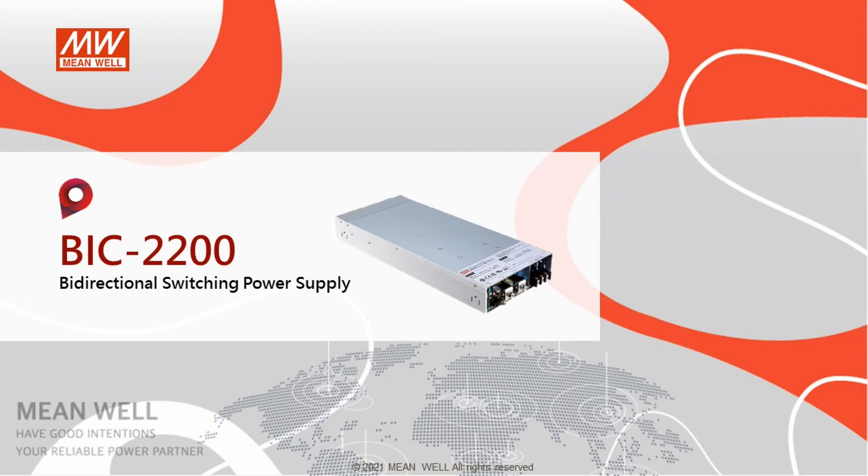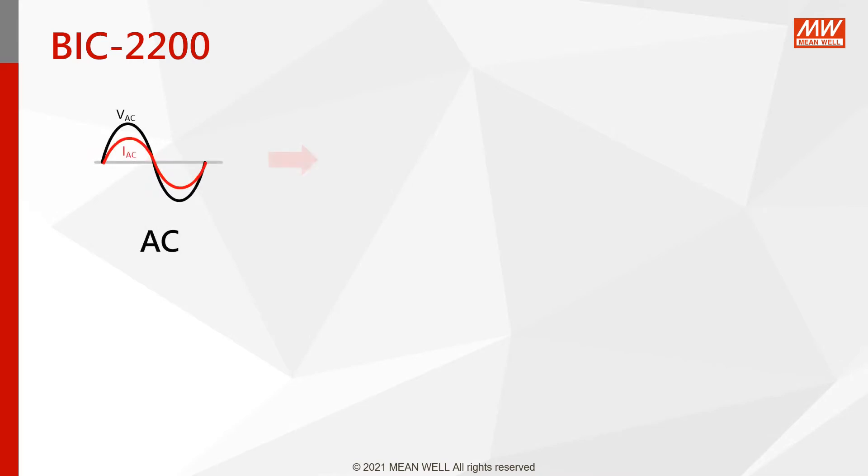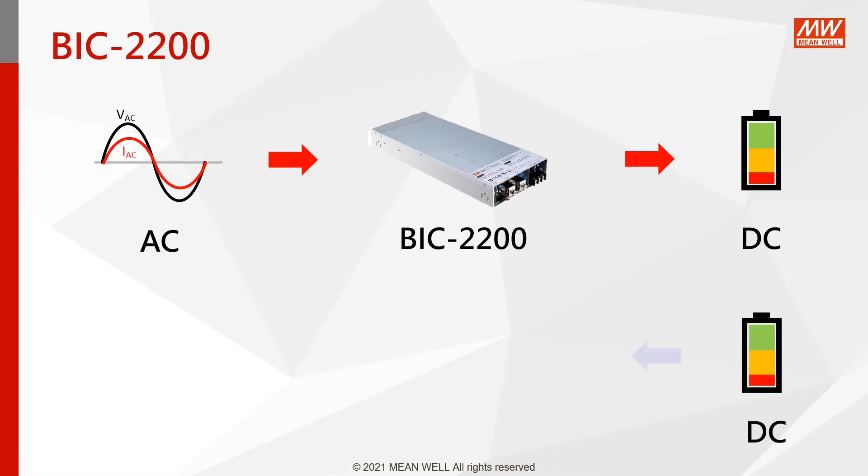The BIC-2200 is a bi-directional power supply. It not only can convert alternating current or AC to direct current or DC, working as an ordinary power supply, but also has the ability to reverse the process, which changes DC to AC as a grid-tie inverter.